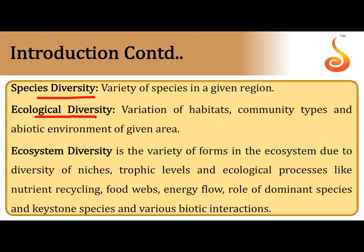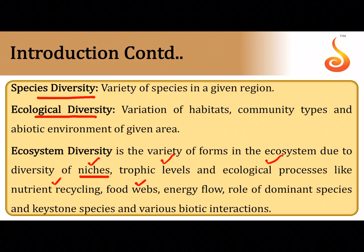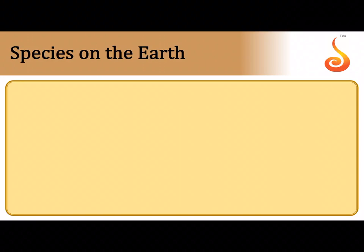Ecosystem diversity is the variety of forms in the ecosystem — the diversity of the roles (niches) that organisms perform, whether producer, consumer, saprophyte, or parasite. What trophic level it occupies and what ecological processes it carries out — nutrient recycling, biogeochemical cycles, food webs, energy flow, and the role of keystone species — are all components of ecosystem diversity.